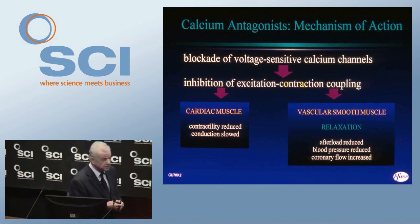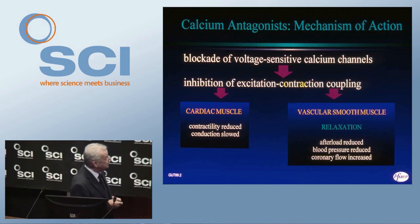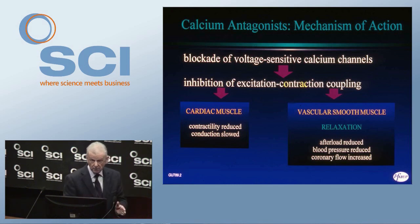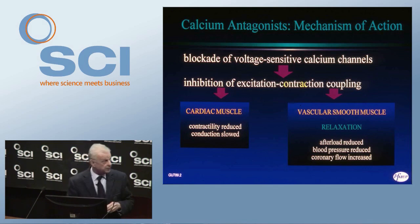If we do that in vascular smooth muscle — the smooth muscle throughout the body which contains the blood vessels — if we block calcium channels on vascular smooth muscle, your arteries are relaxed and your blood pressure drops. So if you want a drug for high blood pressure, a calcium antagonist is ideal. It blocks the channel on the artery, they relax, and down goes blood pressure.